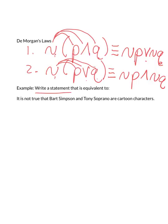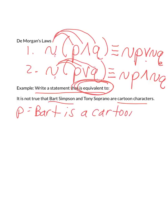For example, it says write a statement that is equivalent to, so no more negation of a conditional stuff like on the last slide. This is a totally different topic. Now, just what has the same meaning, what is equivalent to the following? It is not true that Bart Simpson and Tony Soprano are cartoon characters. Step one, let's assign letters to represent each of the ideas. So I'm going to let P represent that Bart Simpson is a cartoon character. I'll just write, Bart is a cartoon.